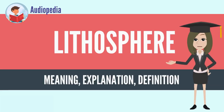Lithosphere. A lithosphere is the rigid, outermost shell of a terrestrial-type planet, or natural satellite, that is defined by its rigid mechanical properties. On Earth, it is composed of the crust and the portion of the upper mantle that behaves elastically on time scales of thousands of years or greater. The outermost shell of the rocky planet, the crust, is defined on the basis of its chemistry and mineralogy.